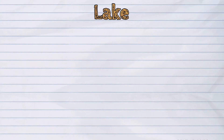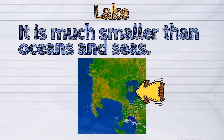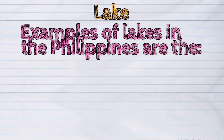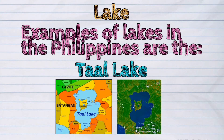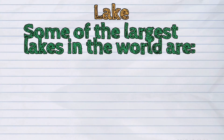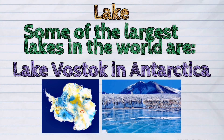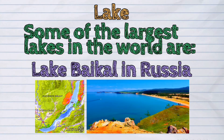A lake is another type of water form. It consists of fresh water and is surrounded by land. It is much smaller than oceans and seas. Examples of lakes in the Philippines are the Taal Lake in Batangas and Lake Sebu in South Cotabato. Some of the largest lakes in the world are Lake Victoria in Africa, Lake Vostok in Antarctica, and Lake Baikal in Russia.